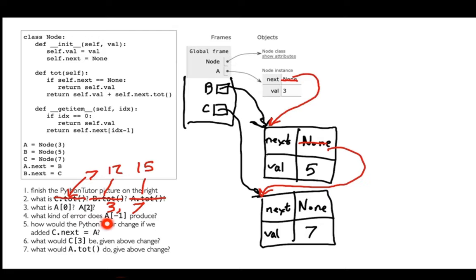What error do I get if I say a[-1]? Remember, a[-1] is just calling get_item with negative one. The base case is when index is zero, but I have negative one. So I make a call with negative two, then negative three, negative four — the negative number keeps getting smaller. When I do self.next, I chain along the nodes, and eventually I reach none and try to call none.next, which causes an AttributeError on NoneType. So this will crash.